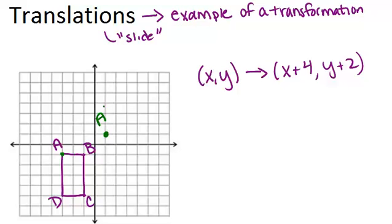So A' and this little notation there is read as prime and it just means our image, our new resulting shape, will be right here. We do the same thing for all of our points.